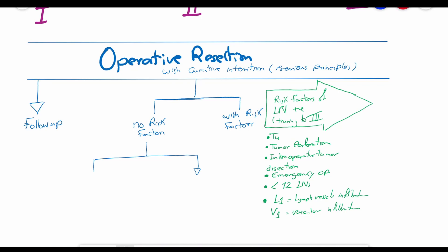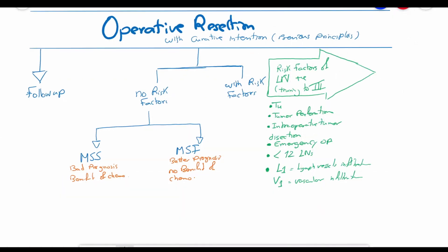In the absence of these risk factors, the microsatellite stability should be evaluated in the pathological report. Microsatellite stable tumors have worse prognosis but benefit from chemotherapy, so adjuvant chemotherapy is justified. On the other hand, microsatellite unstable tumors have a better prognosis and don't benefit much from the chemotherapy, which fails to justify the adjuvant chemotherapy.